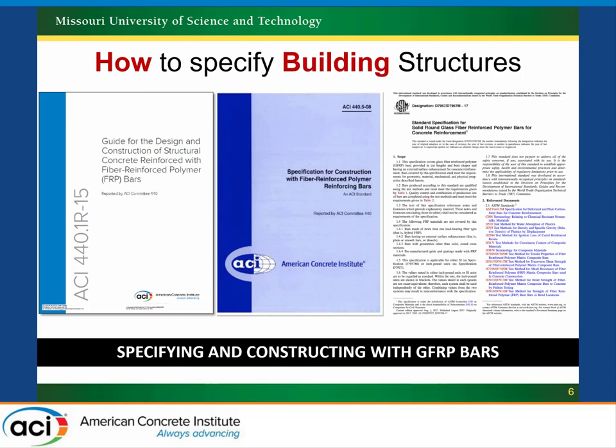On your left you can see the current ACI 440 document for design of FRP. In the middle, a sample specification developed under the K subcommittee, and also a document from ASTM as a sample. These are all products that have flowed directly out of the work here at ACI.